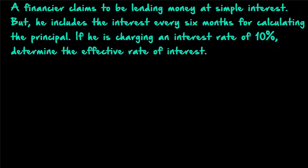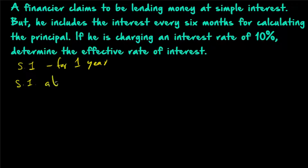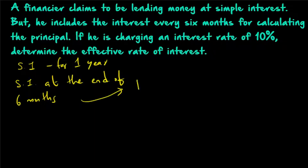What's the given question? A financier is telling that he is lending the money at simple interest. Normally, simple interest is calculated for 1 year. But here, he is actually calculating simple interest at the end of 6 months. At the end of the first 6 months itself, he is calculating the simple interest and adding it to the principal. Suppose P is the principal at the beginning of the year.